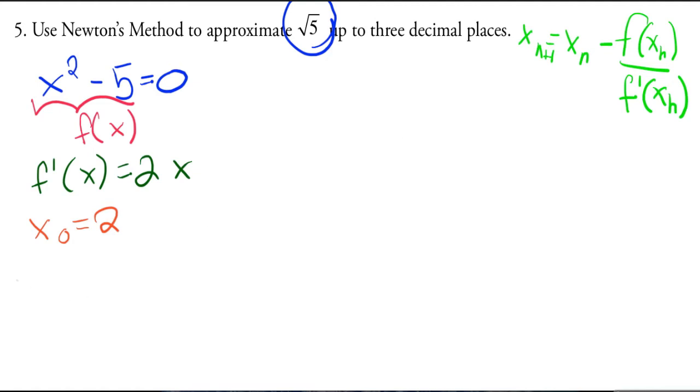Basically you grab your previous one. So here what we're going to have is x sub 1 is equal to the previous, x sub 0, which is 2, minus f of x sub 0. So f of 2—if I plug in 2 here I would get 2 squared minus 5 over f prime of 2, so 2 times 2.